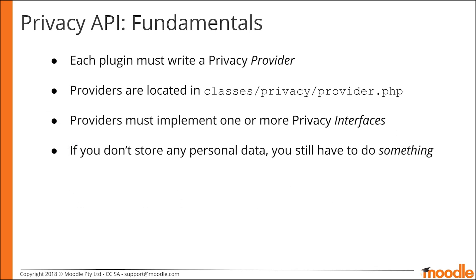In order to implement the new Privacy API, your plugin must write a PrivacyProvider class. This class will be located within your plugin's code at classes/privacy/provider.php. The API makes use of PHP namespaces to auto-load your provider, and your provider must implement one or more of the Privacy PHP interfaces. Even if you don't store any personal data, you still have to do something.